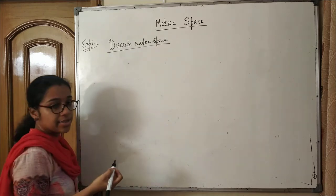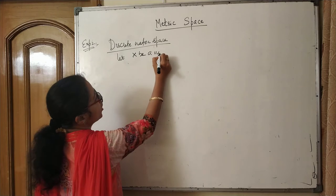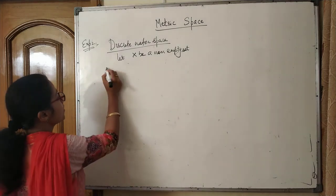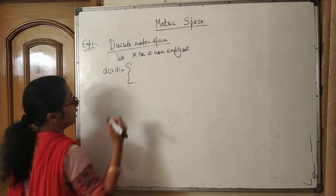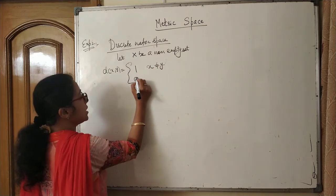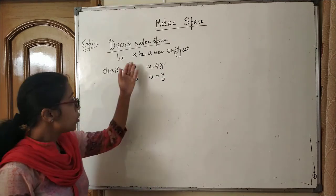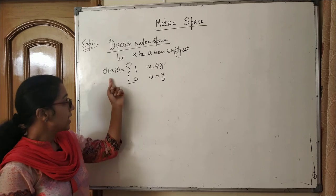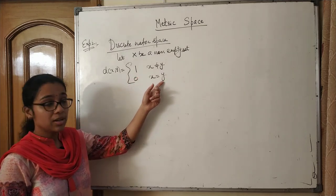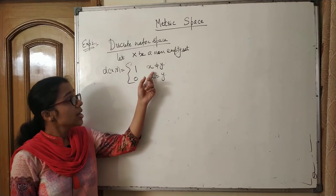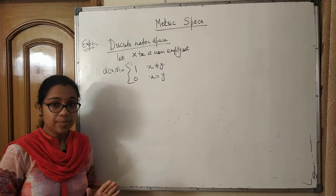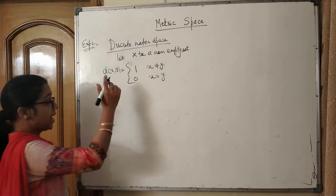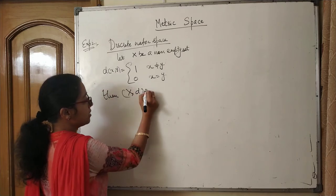Next, example two: the discrete metric space. This is a very important metric on any set. Let X be any non-empty set. We define D(x, y) = 1 if x ≠ y, and D(x, y) = 0 if x = y. So the distance between any two elements is either 0 or 1.